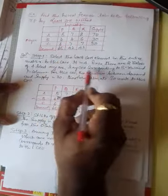The first step is: select the least element in the entire matrix. In this case it is 4. Since there are two values of 4, select one. We just observe in the table there are 4 values. We shall choose arbitrarily, say the cell corresponding to B row and P column.